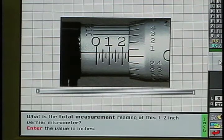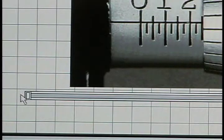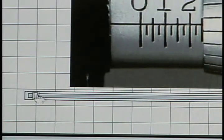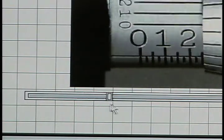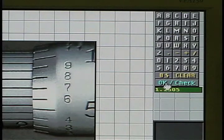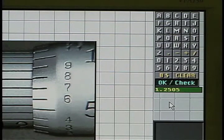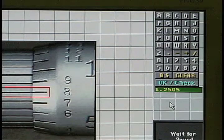Here you see the test on inch micrometers. What is the total measurement reading of this one to two inch vernier micrometer? Enter the value in inches. The trainee can rotate the mic to read the vernier by moving the slider back and forth, then enter the value on the keypad. Good answer. The total measurement reading is one inch, two hundred and fifty thousandths and five tenths.